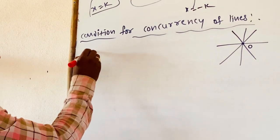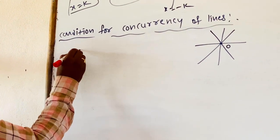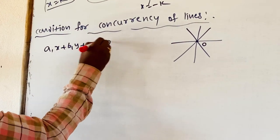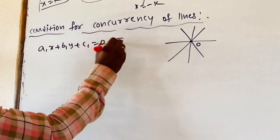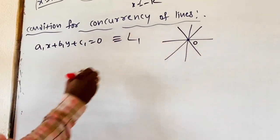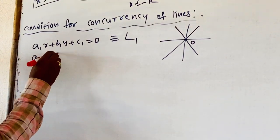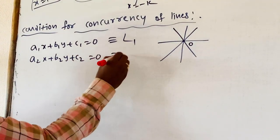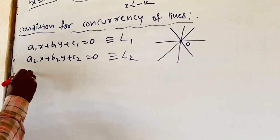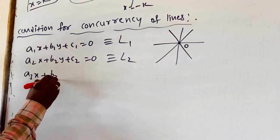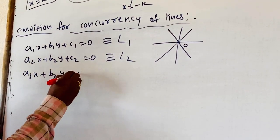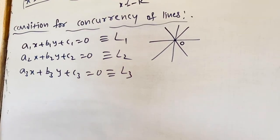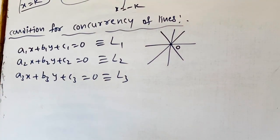Here I am taking three lines: A1x + B1y + C1 = 0, which is known as L1; A2x + B2y + C2 = 0, which is known as L2; and A3x + B3y + C3 = 0, which is known as L3. L1, L2, L3 are three straight lines which intersect.